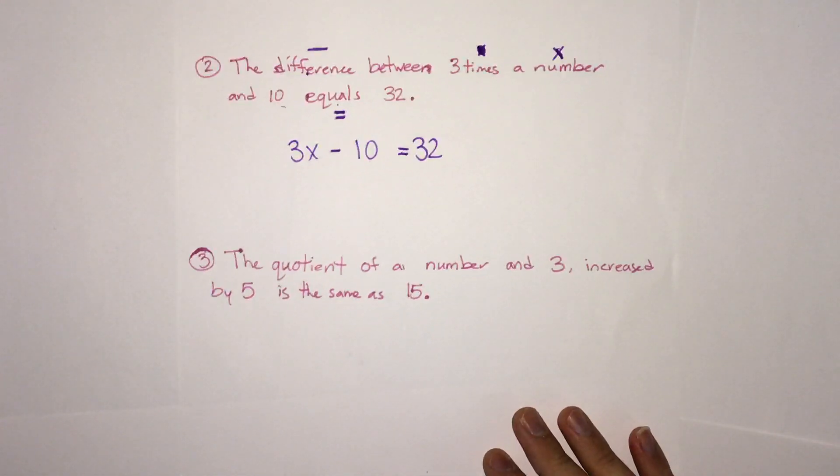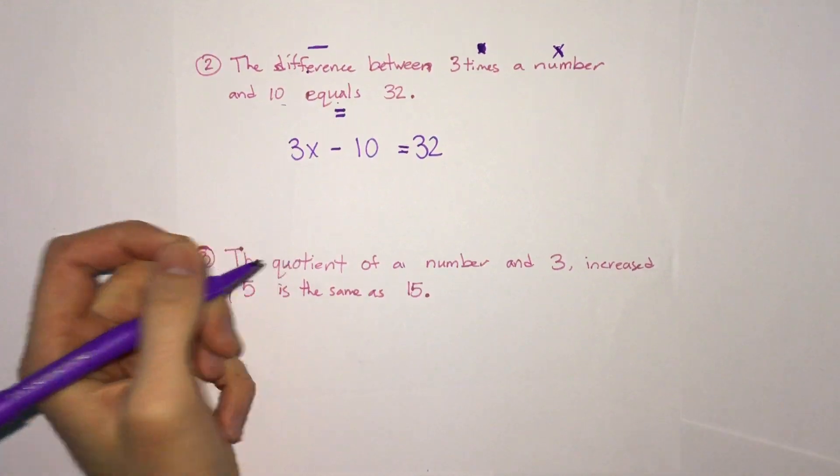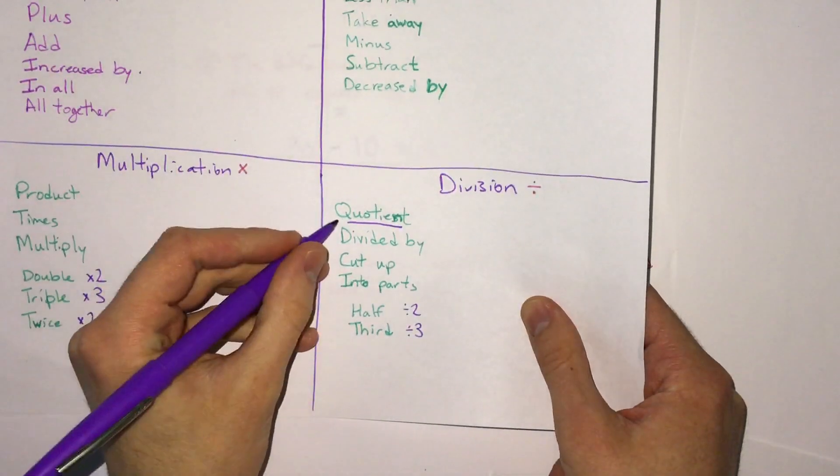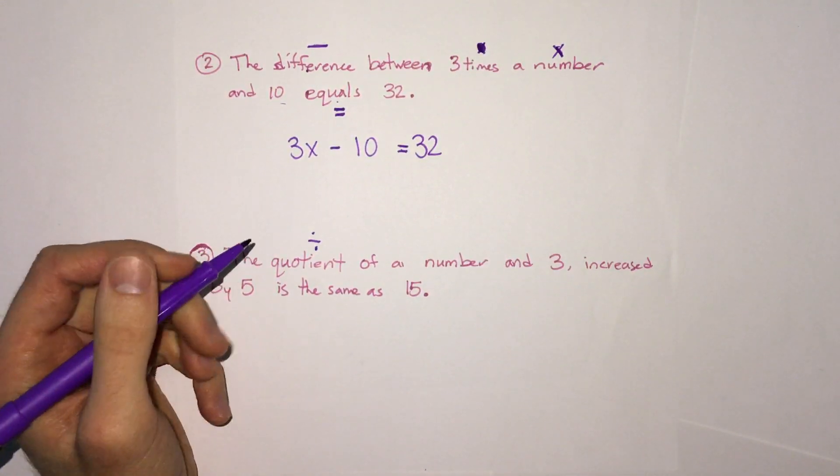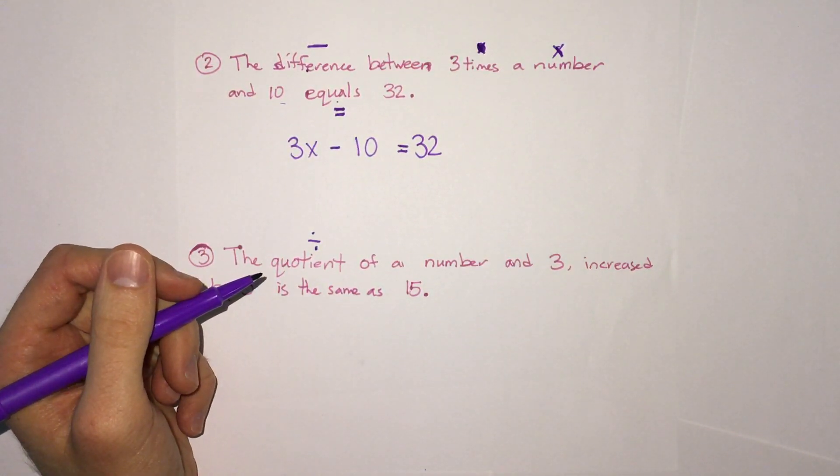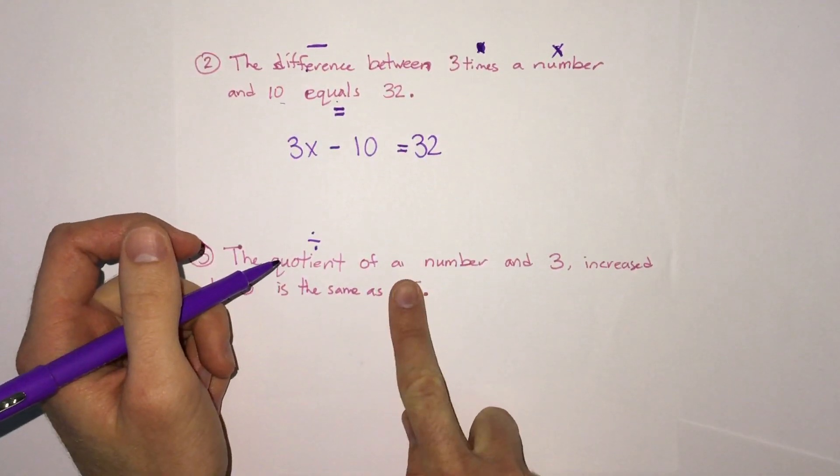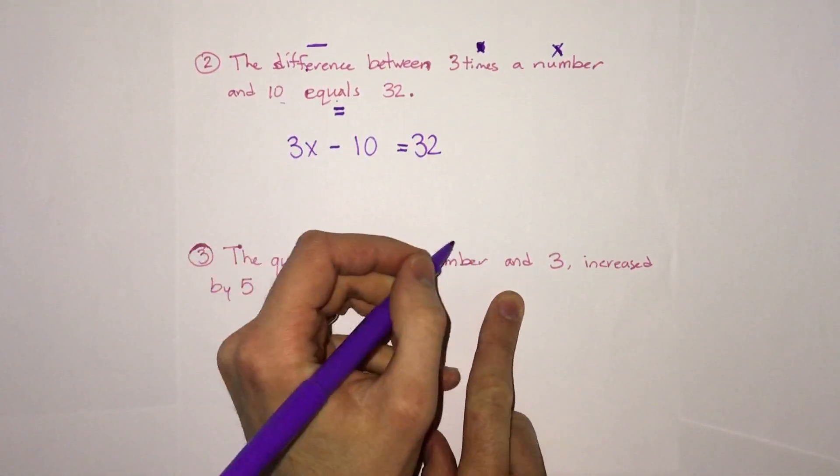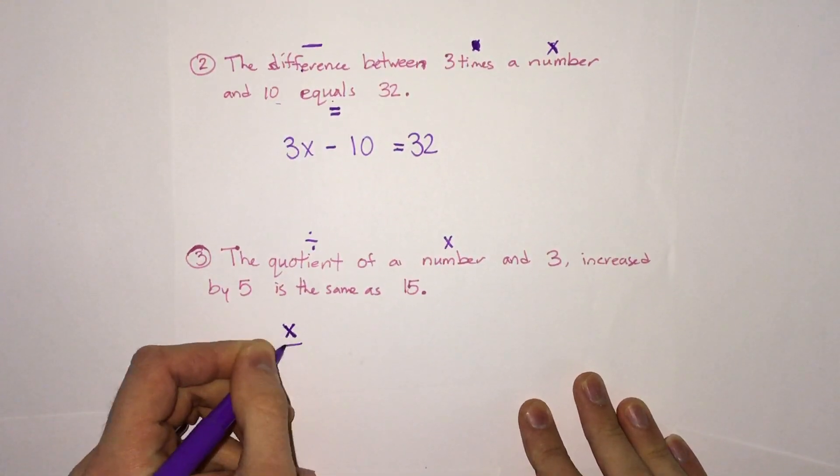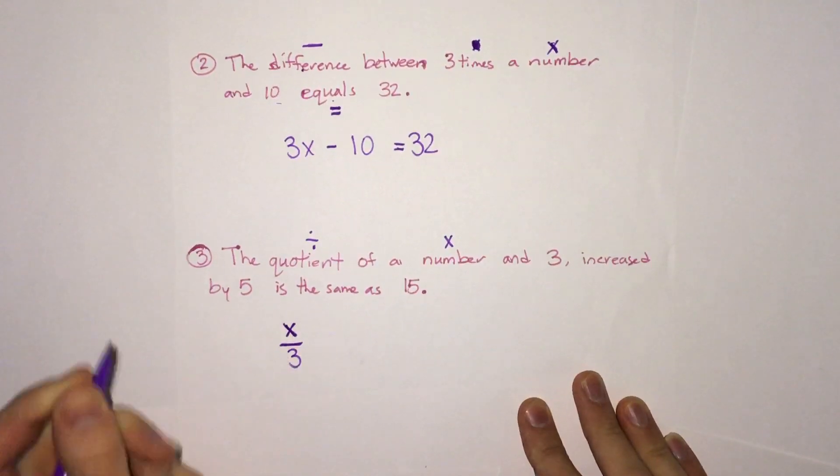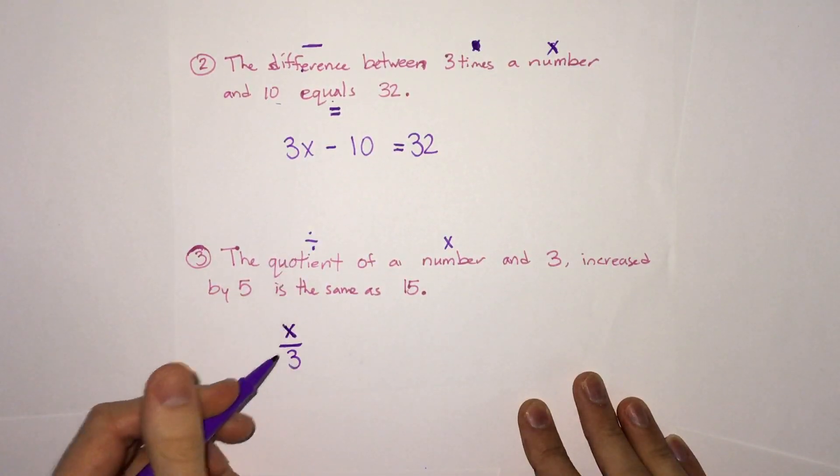And the last one here on this page says the quotient. Now if we remember, quotient is division. So the quotient of a number and three, increased by five is the same as 15. Well, let's start with that word quotient. It's the quotient of what? A number, so x and three. So that's to say x divided by three, or if we write it, x over three. In algebra equations, we often write our division as a fraction.